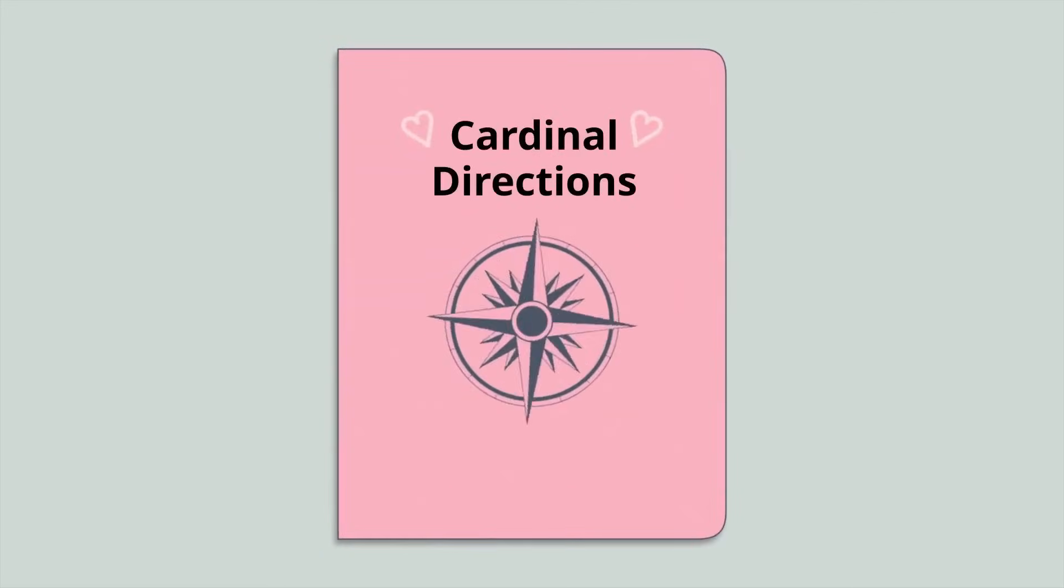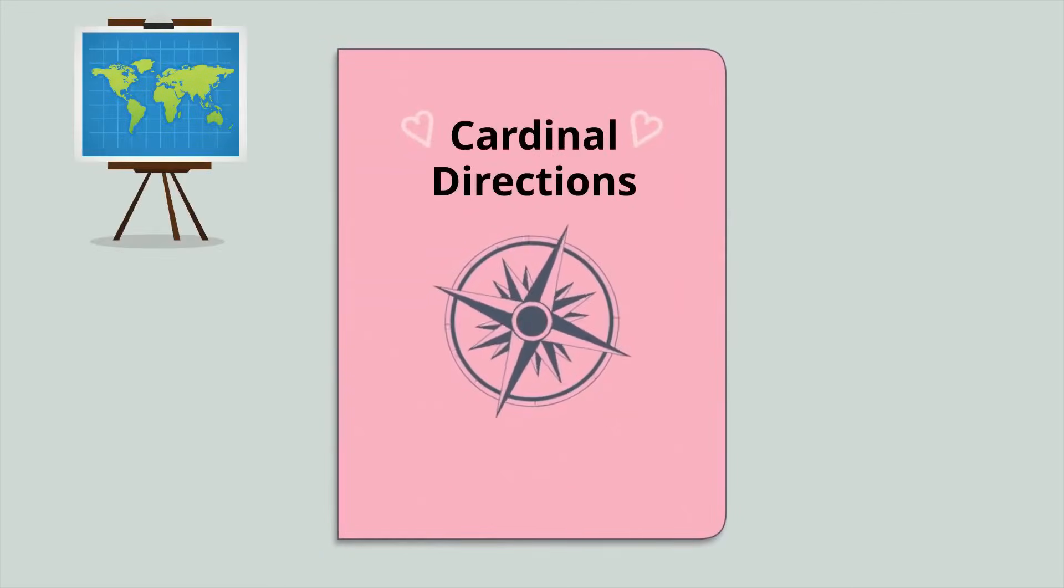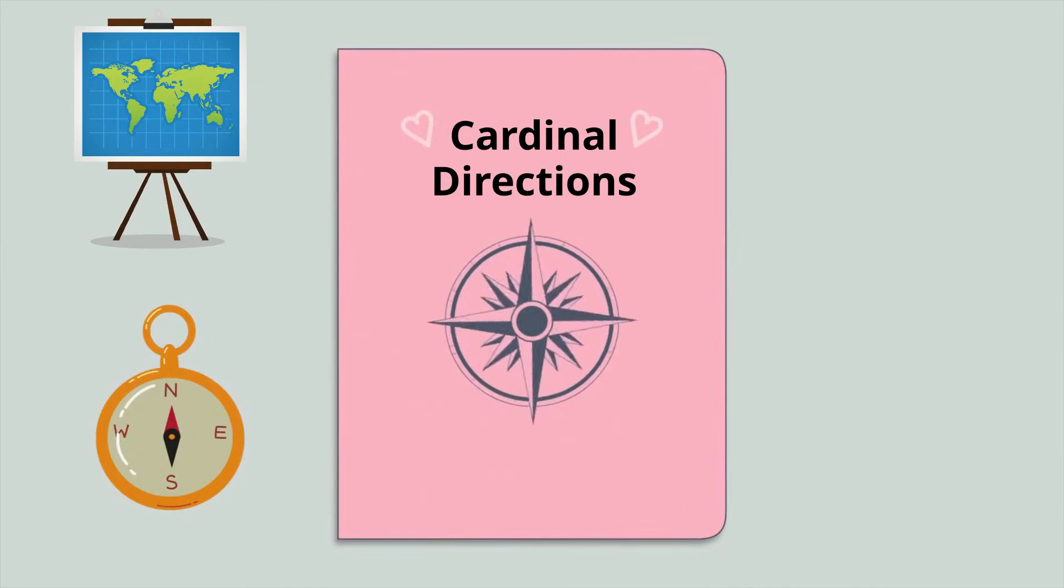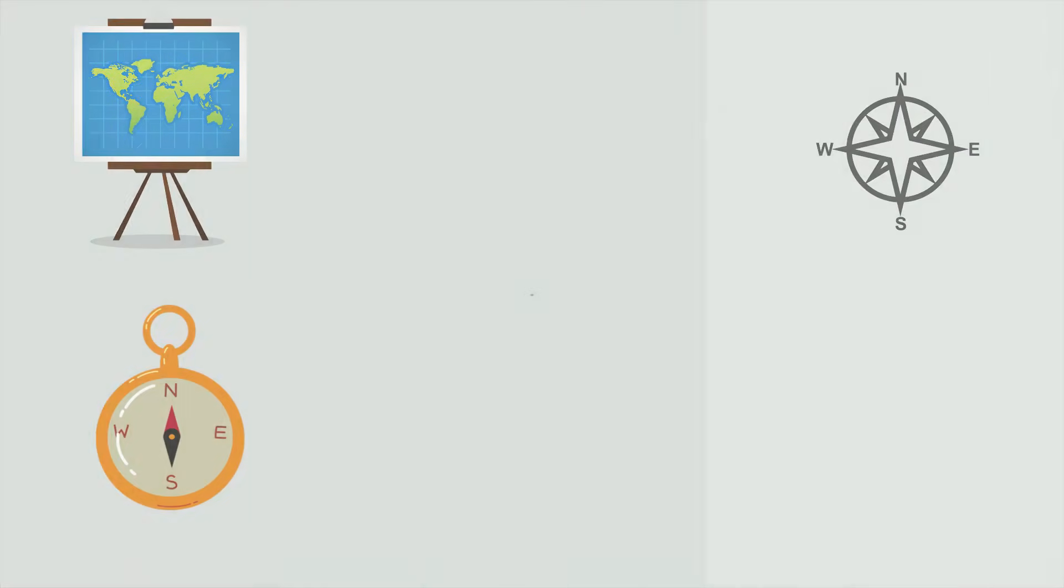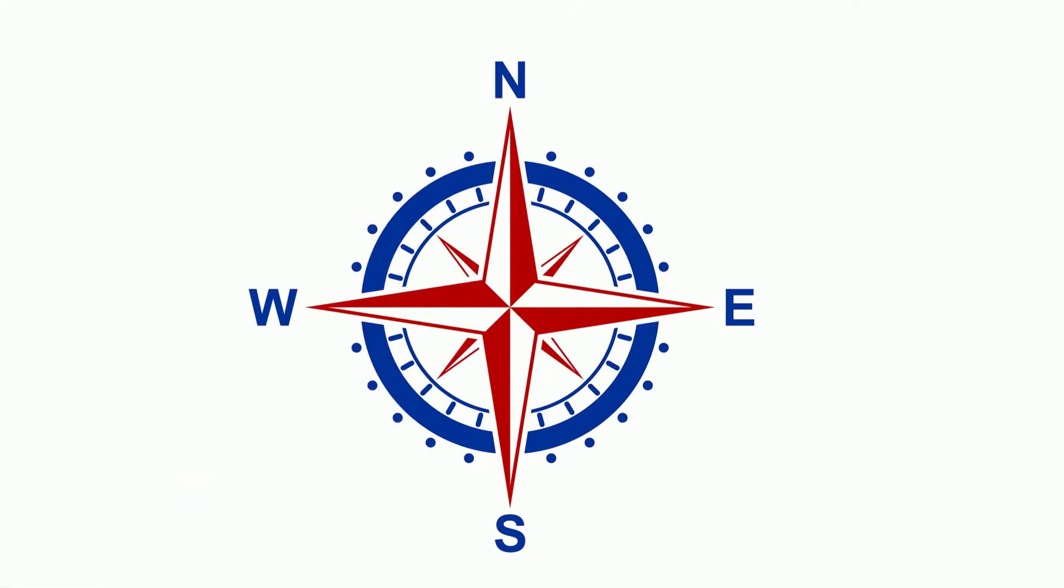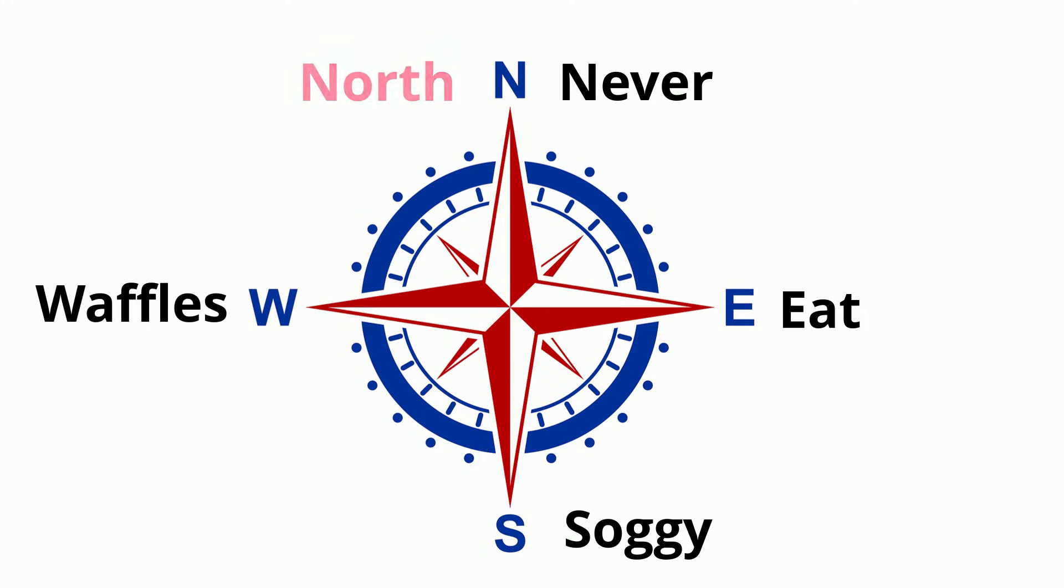The cardinal directions are found on maps and compasses and can be found on a compass rose. Here is one example of a compass rose. But what are the directions found on a compass rose? An easy way to remember this is to use never eat soggy waffles for north, east, south, west.